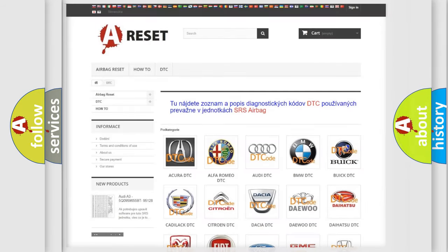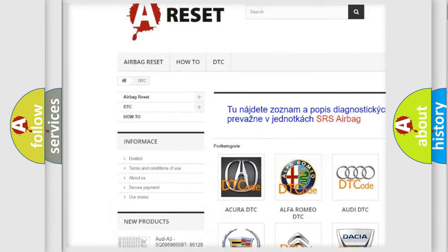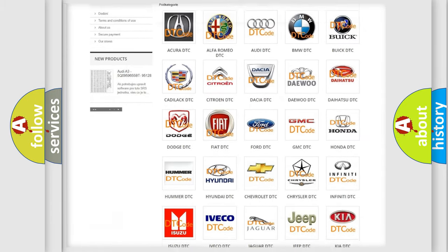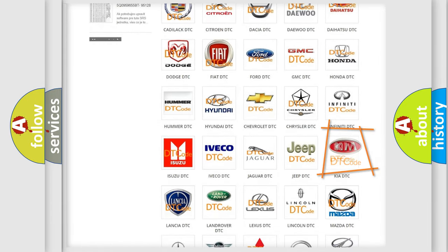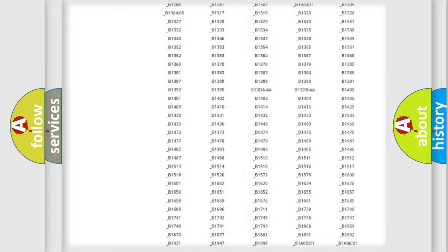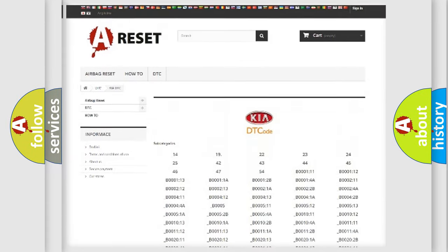Our website airbagreset.sk produces useful videos for you. You do not have to go through the OBD-2 protocol anymore to know how to troubleshoot any car breakdown. You will find all the diagnostic codes that can be diagnosed in Kia vehicles.